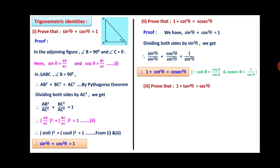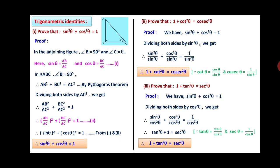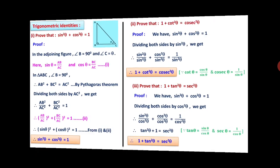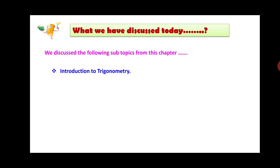Prove that 1 + tan²θ = sec²θ. Starting from sin²θ + cos²θ = 1, divide both sides by cos²θ. We get: sin²θ/cos²θ + cos²θ/cos²θ = 1/cos²θ. This gives: tan²θ + 1 = sec²θ, since sin/cos = tan and 1/cos = sec. Rearranging: 1 + tan²θ = sec²θ. Hence proved.